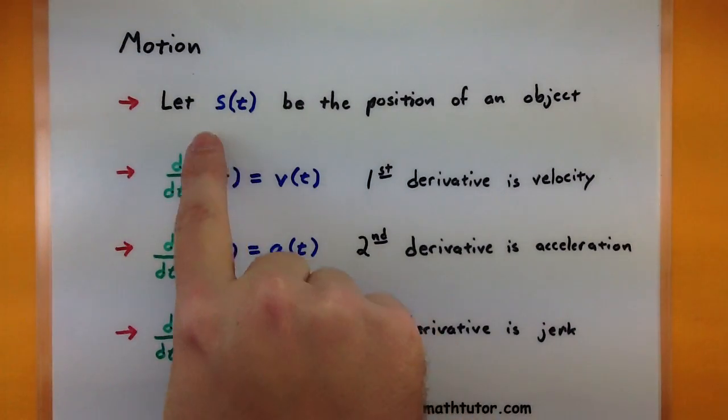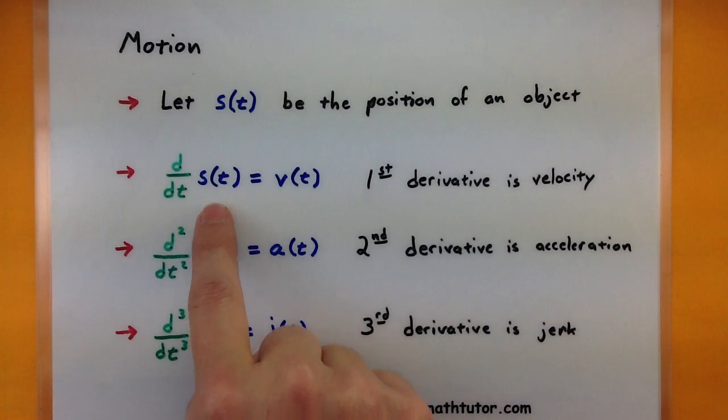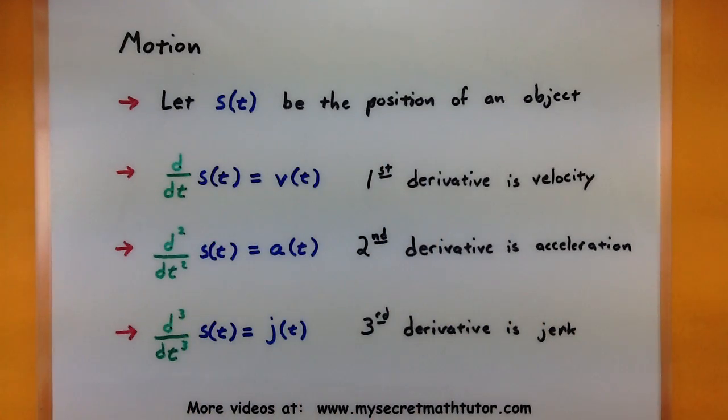For example, if your original function is the position, the first derivative is your velocity, and the second derivative is your acceleration, and the third derivative is the jerk. So look for these key terms in these problems so you know which derivative you need to take.